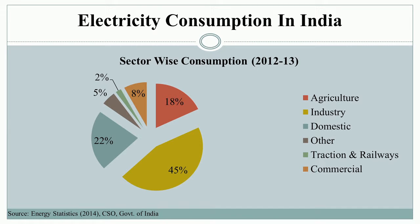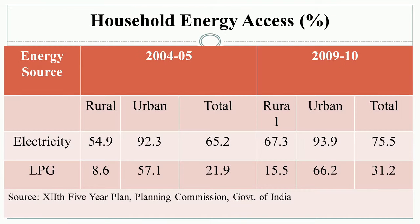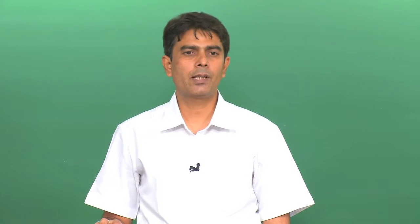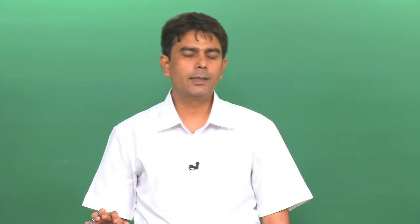Looking at state-wise electricity consumption in India, it is the commercial sector and industry which consume the most electricity. Agriculture consumes 18 percent, showing the relative backwardness of agriculture in terms of electricity consumption. In household energy consumption, electricity accounts for 75.5 percent and LPG for 31.2 percent of household energy access in 2009-10. LPG access improved from 8 percent to 15.5 percent in rural areas and from 66.2 percent in urban areas, with current figures of 8.7 percent rural and 57.8 percent urban.